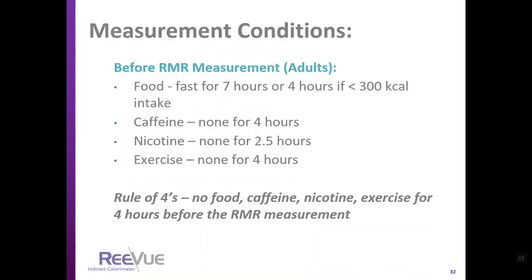Measurement conditions are very important to assure accuracy. Before the resting metabolic rate measurement for adults, food should be eliminated — a fast of 7 hours, or 4 hours if a small meal was taken in. Caffeine: none for 4 hours. Nicotine: none for 2.5 hours. Exercise: none for 4 hours. The rule of thumb is no food, caffeine, nicotine, or exercise for 4 hours before the RMR measurement.